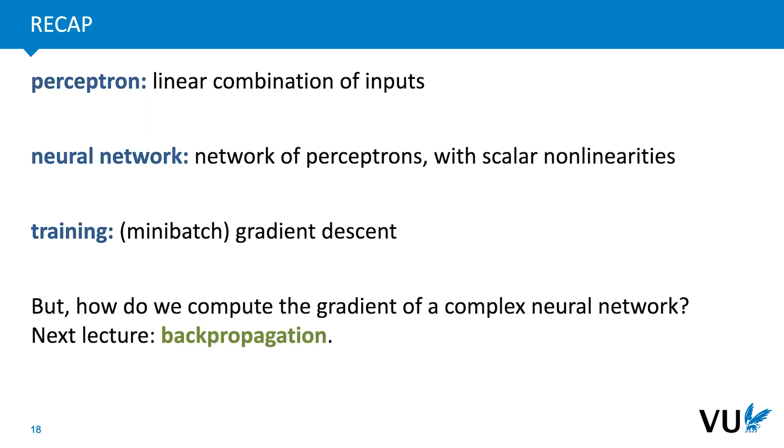So that is the basic idea of neural networks. We define a perceptron, a simplified model of a neuron, which we chain together into a neural network with nonlinearities added. We then define a loss, and train by gradient descent to find good weights.